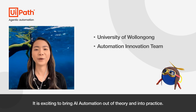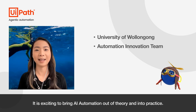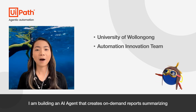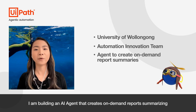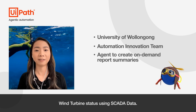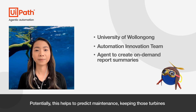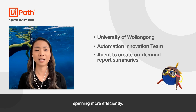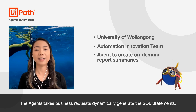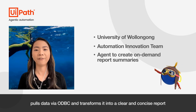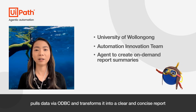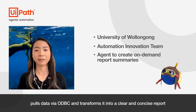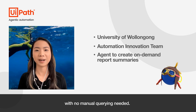I'm building an AI agent that creates on-demand reports summarizing wind turbine status using sensor data. Potentially, this helps to predict maintenance, keeping those turbines spinning more efficiently. The agent takes business requests, dynamically generates SQL statements, pulls data via ODBC, and transforms it into a clear, concise report with no manual querying needed.